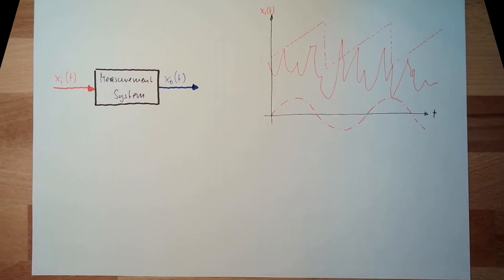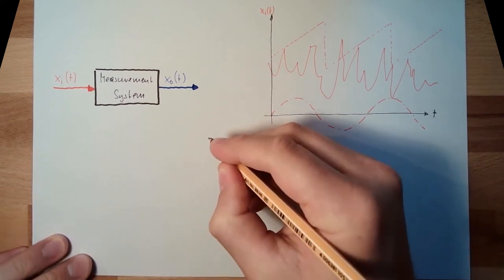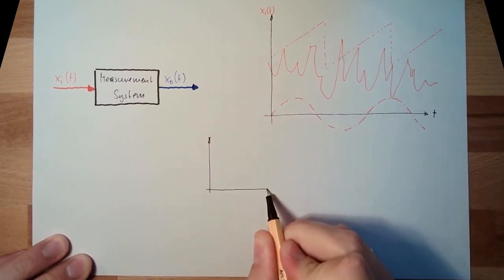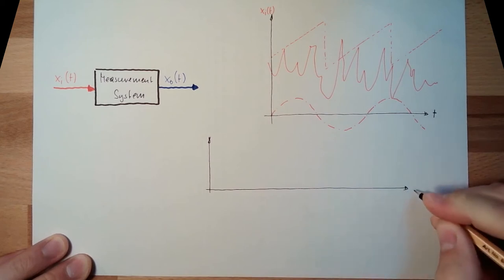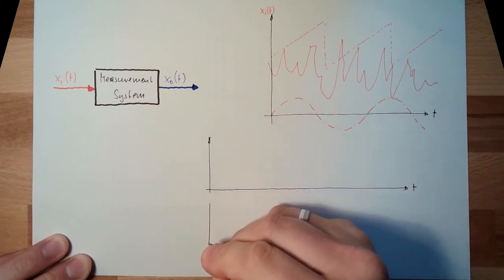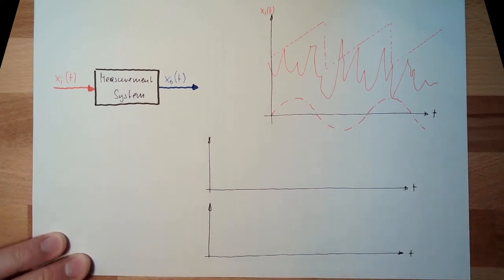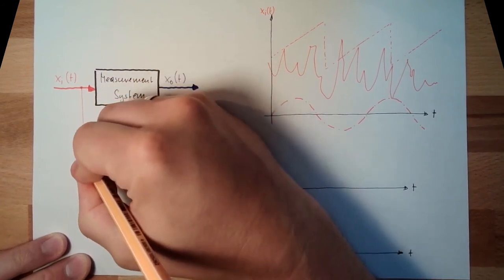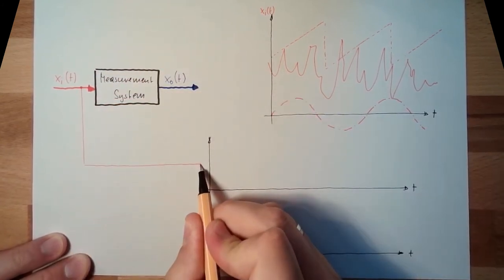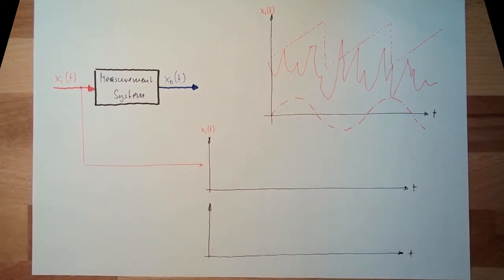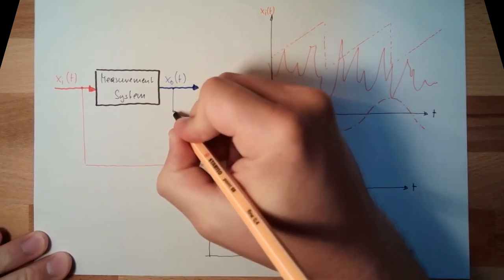So what is needed is simply a recorder where we can record two channels, both over time. One channel we are connecting to XI. This channel is recording what is happening on XI.